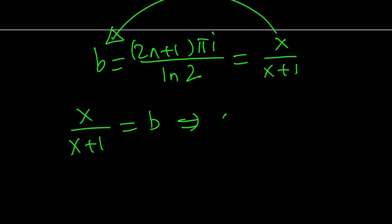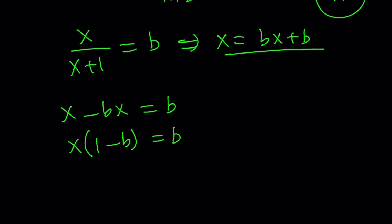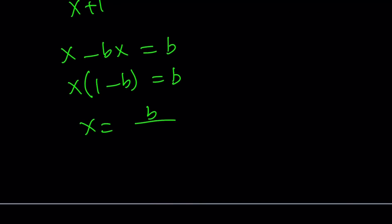Cross multiply: x equals bx plus b. And here, our goal is to solve for x because that's our goal. So, now let's solve for x here. Put the x's together. Factor out. Divide. And you got the answer.